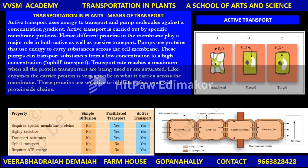Some carrier or transport proteins allow diffusion only if two types of molecules move together — these are symports and antiports. Active transport uses energy to transport and pump molecules against a concentration gradient. Active transport is carried out by specific membrane proteins, and different proteins in the membrane play a major role in both active and passive transport.